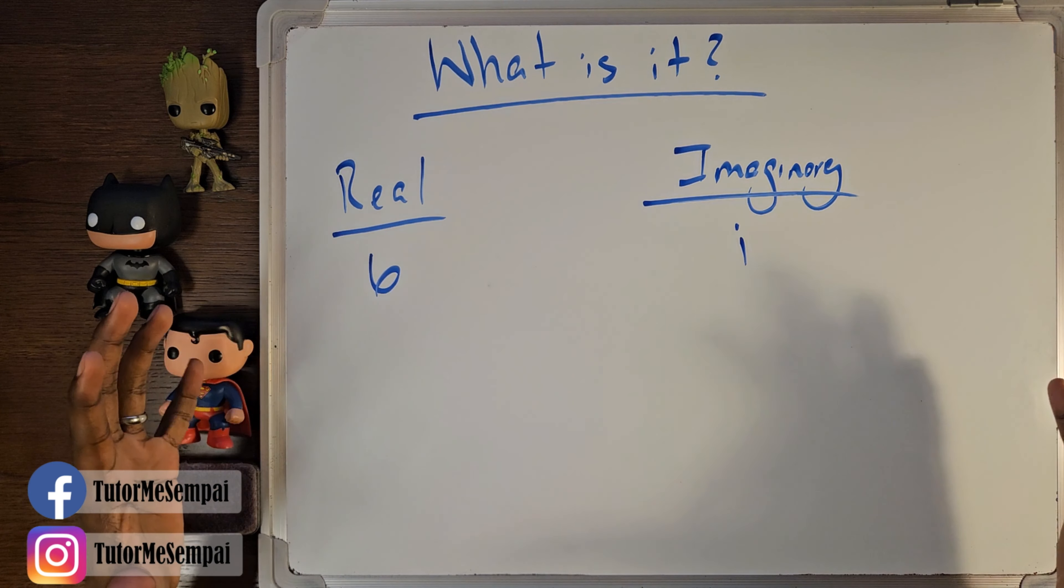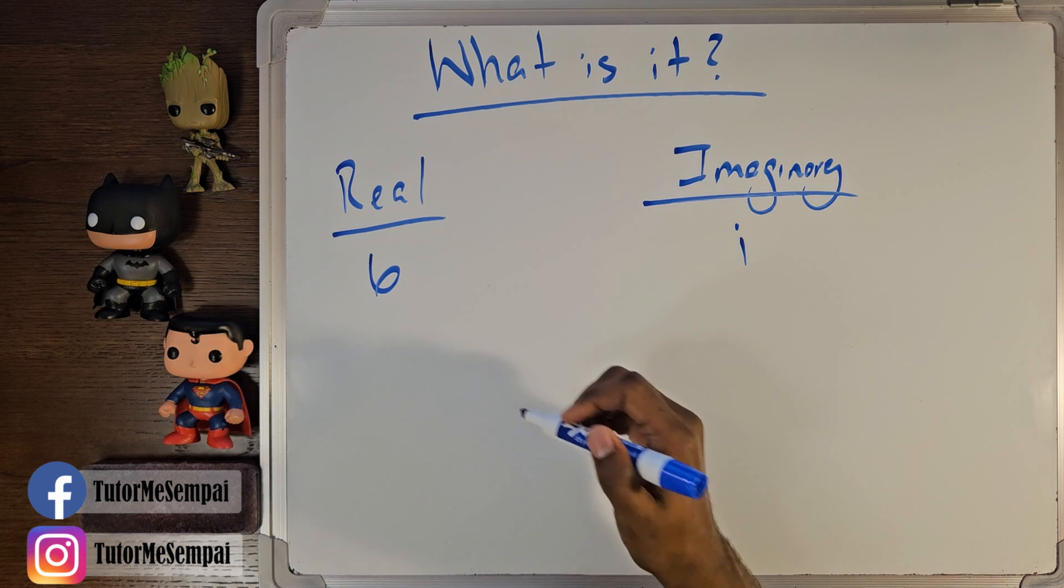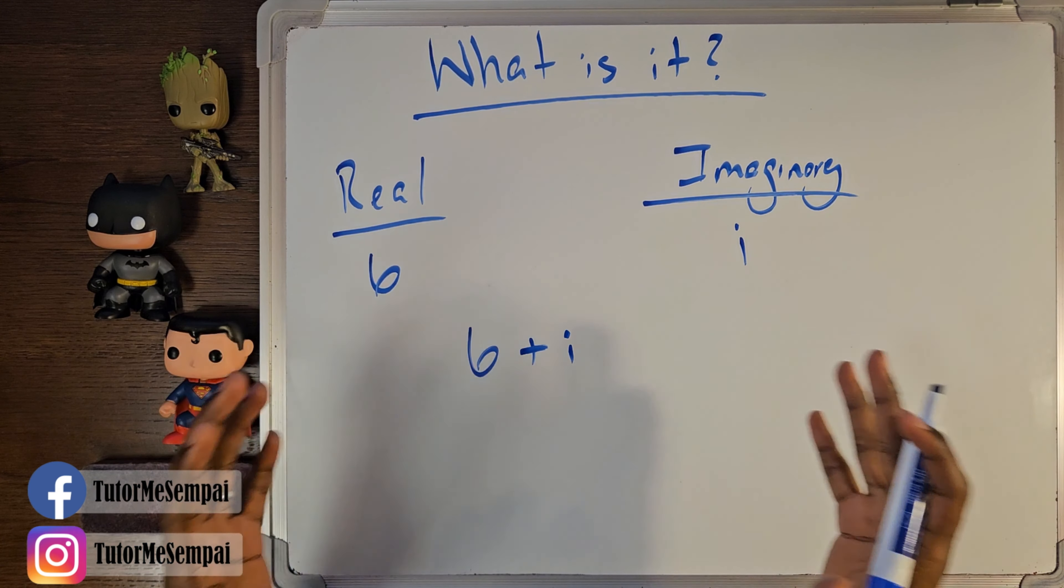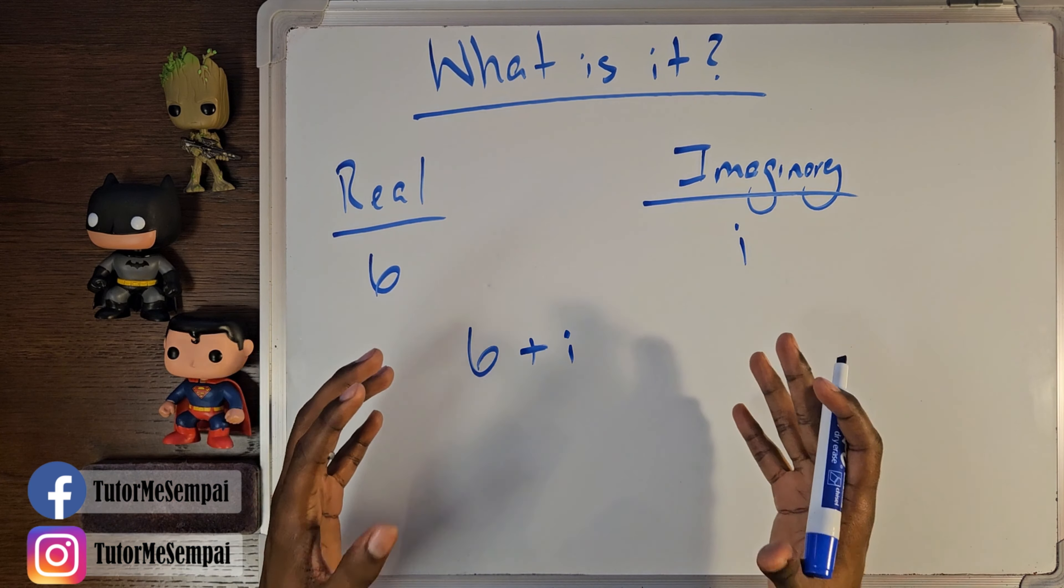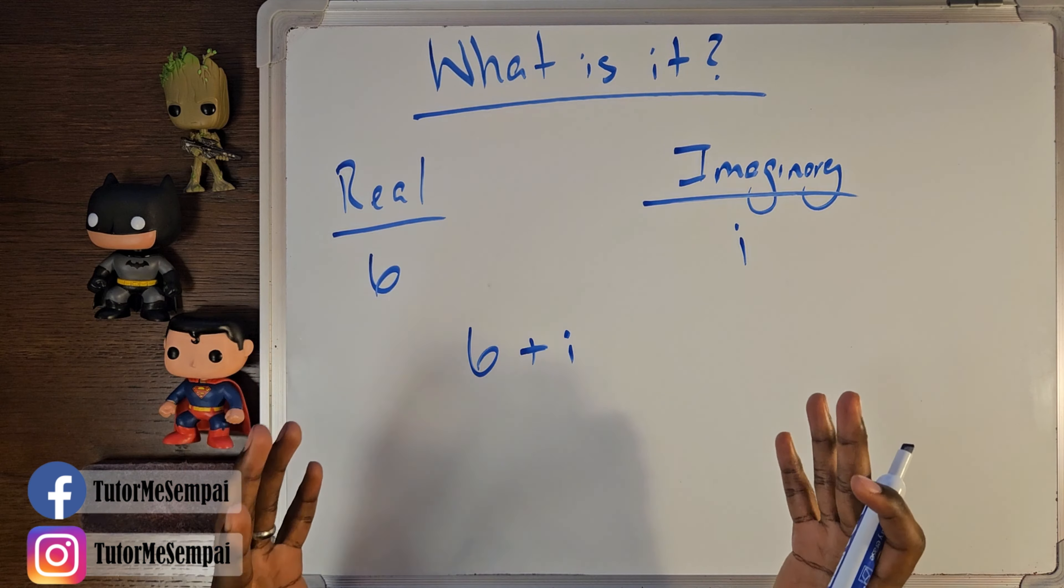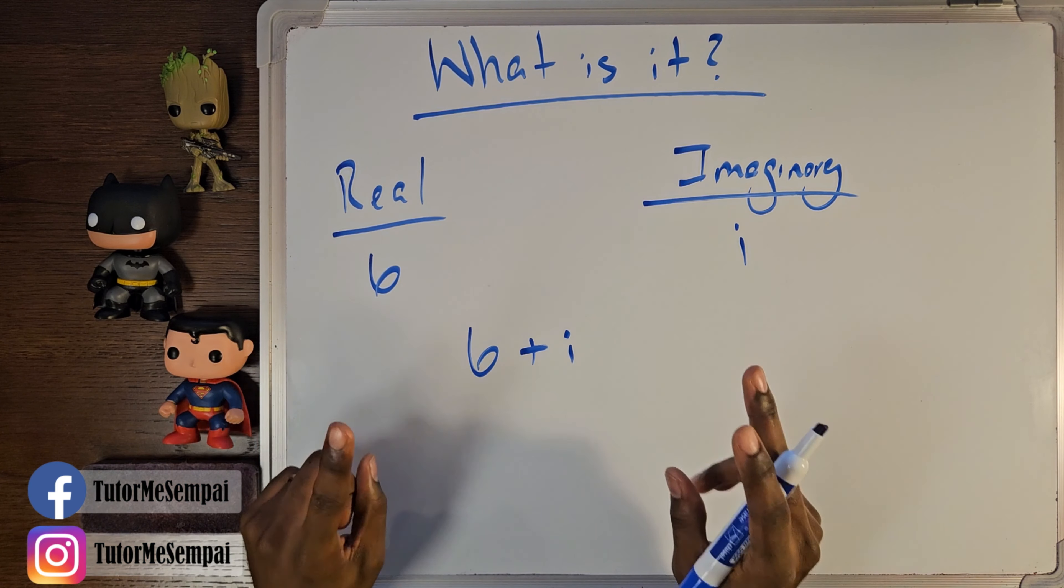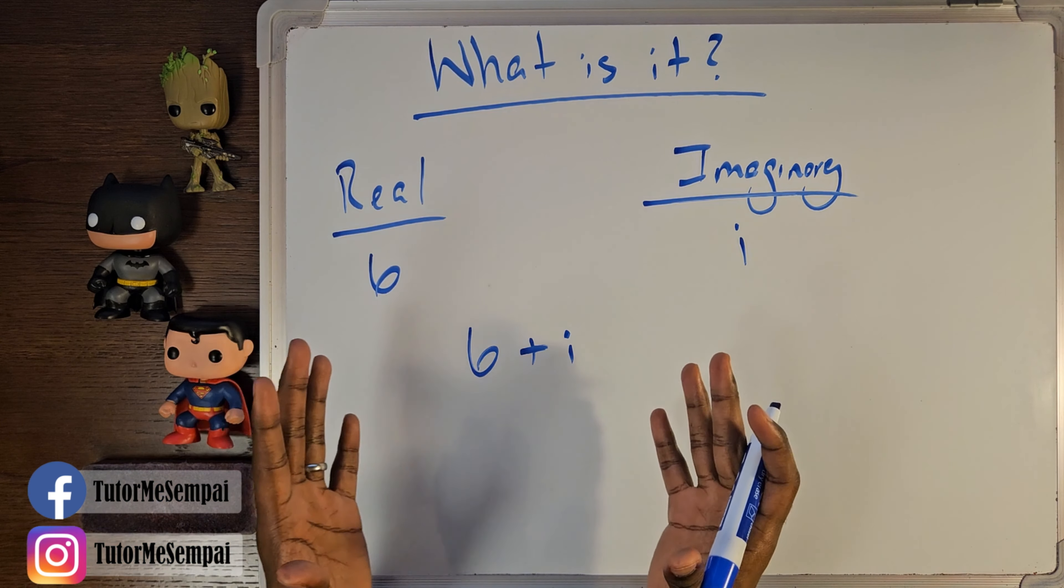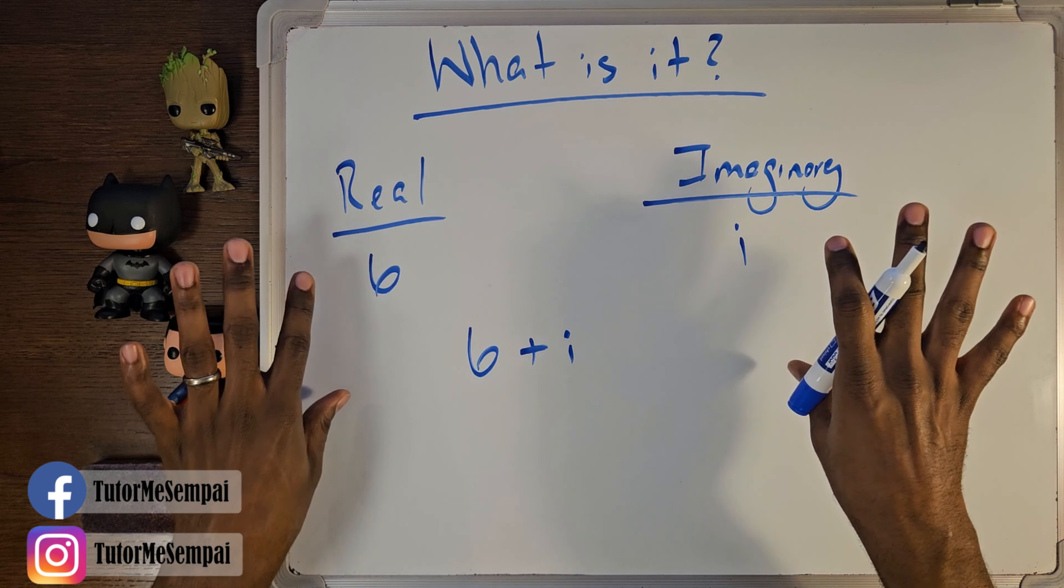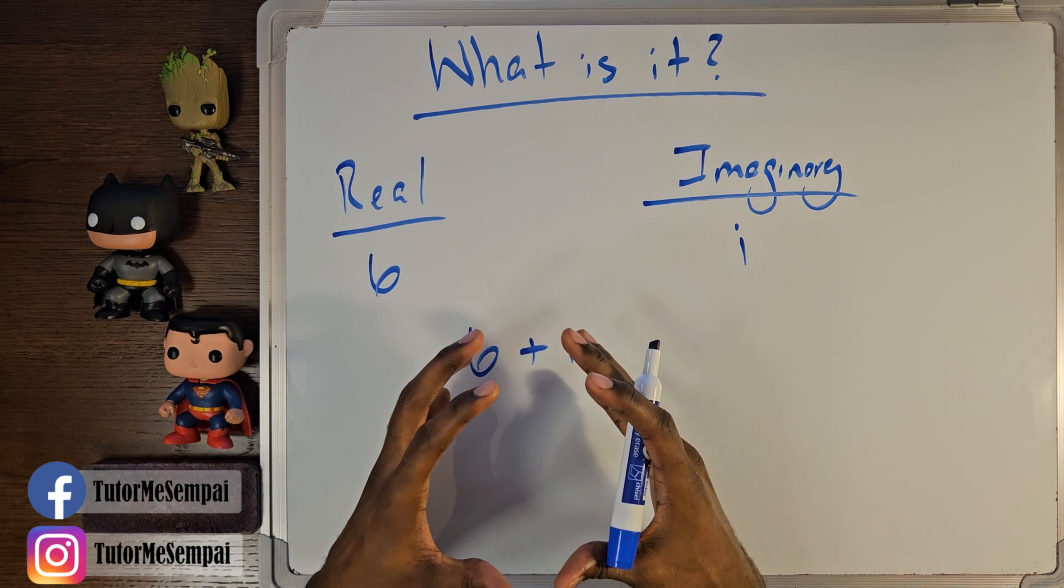But what happens if you try to combine a real and imaginary number? Let's say you had 6 plus i. In this case, what do we do if we have this combination of a real and an imaginary number? Well, if you were trying to do this, something special does happen. Although you can't simplify this any more than that, because you can't actually combine a real and an imaginary number. They're in two separate camps. There is no simplifying them.